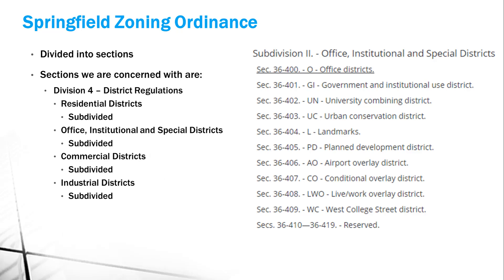You guys are going to do a commercial building - it's going to be an office building. That's probably one of the easiest buildings to design with some of the fewest restrictions. The zoning ordinance is divided into divisions, and Division Four covers district regulations broken into categories. Division Four, under office, is the category you'll be working through. Depending on where your building is located, you have to look at all those items.